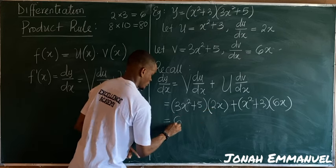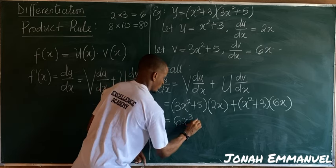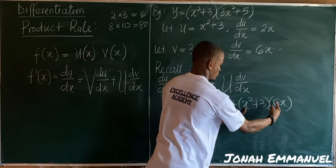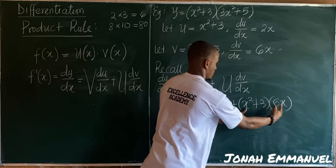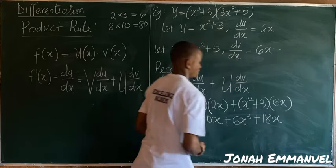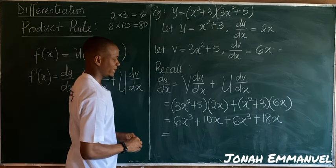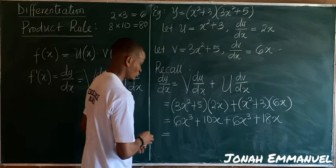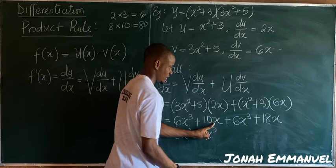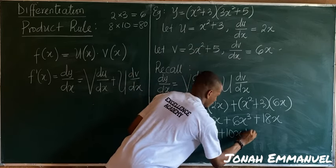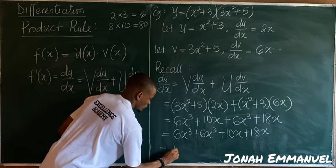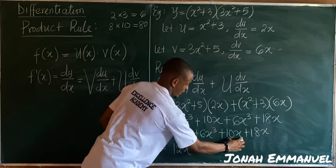Now expand the brackets: (3x² + 5)(2x) gives 6x³ + 10x. Then (x² + 3)(6x) gives 6x³ + 18x. Collecting like terms: 6x³ + 6x³ gives 12x³, and 10x + 18x gives 28x.